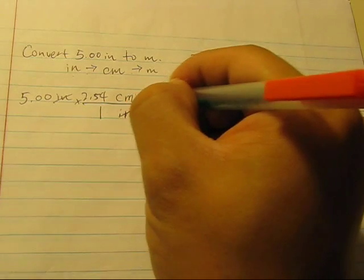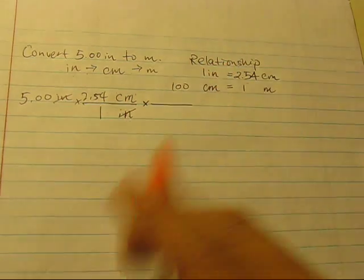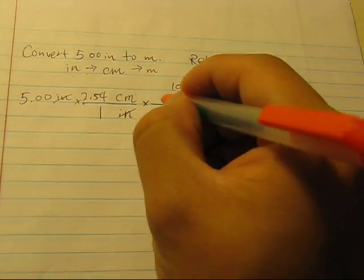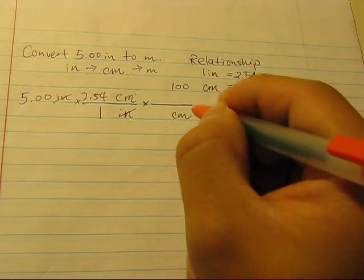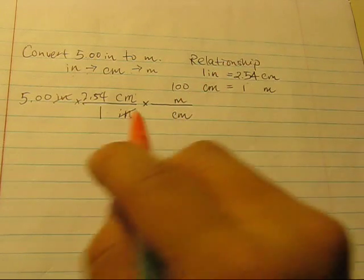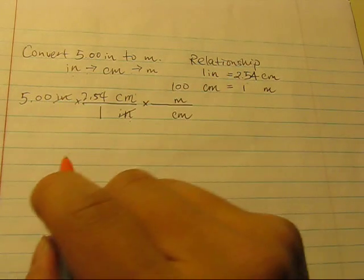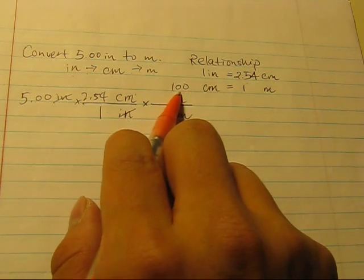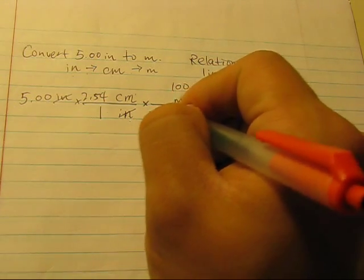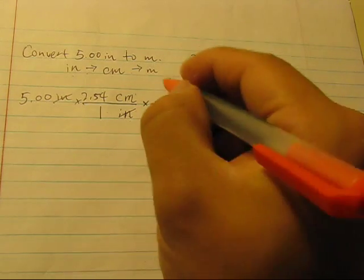Next, we are going to convert from centimeters to meters. We would like to cancel out the centimeters, and we would like the meters on top. And again, what's the number? Centimeters, we have 100. For meters, we have 1.